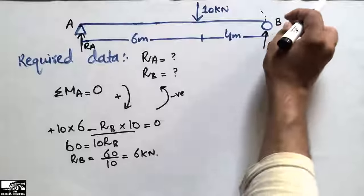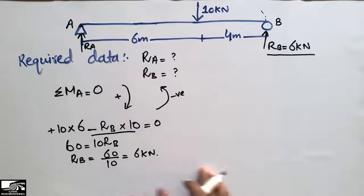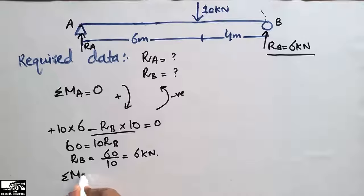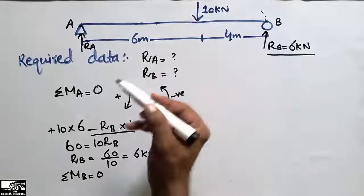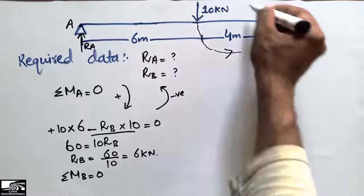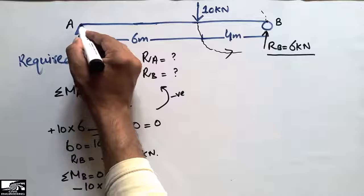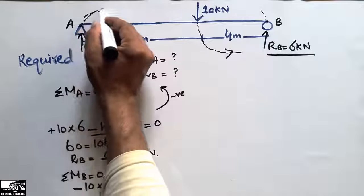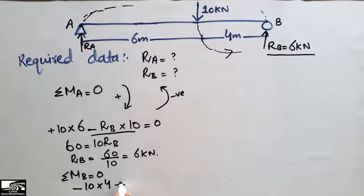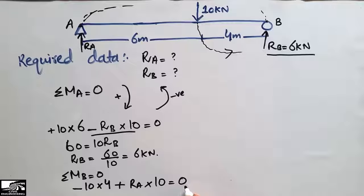Similarly, we assume the summation of moments at point B is equal to zero. The 10 kN load now acts anti-clockwise around point B, so we write it with a negative sign: minus 10 multiplied by 4 meters. RA acts clockwise around point B, so with a positive sign: plus RA multiplied by its moment arm of 10 meters. The summation of moments equals zero.